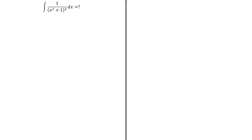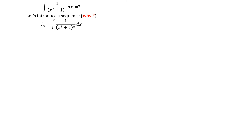We want to compute the anti-derivative of 1 over (x² + 1)³. The idea here is to introduce a sequence — I will explain why shortly. We introduce a sequence I_n, which is the anti-derivative of 1 over (x² + 1)^n. We know that I_1 is arctan(x), which is very classical. But if we can get a relationship between I_{n+1} and I_n, it is going to be very useful.